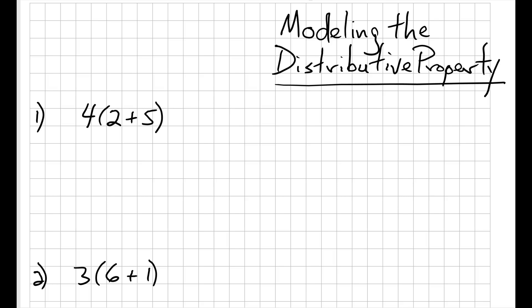Remember the distributive property is usually written as A times B plus C equals A times B plus A times C. And here you can see in example number one, we have an expression that looks just like that. 4 times 2 plus 5 looks like A times B plus C.